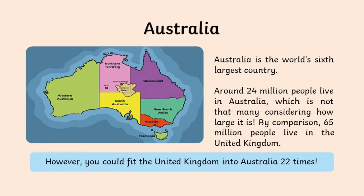Australia is the world's sixth largest country. It has around 24 million people living there, which is not that much considering how large it is. By comparison, we have approximately 65 million people living in the United Kingdom, yet the United Kingdom could fit into Australia 22 times.